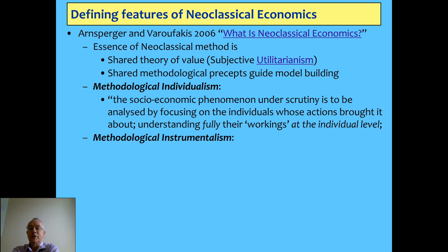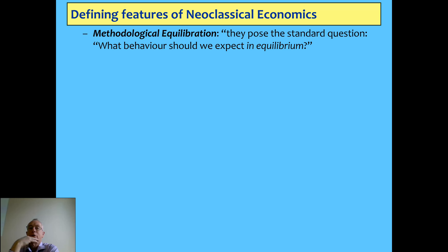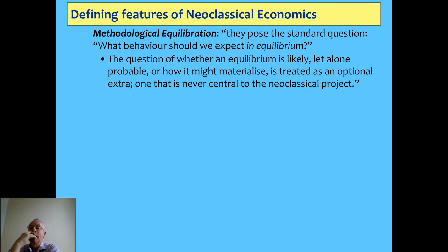It's also instrumental — preference satisfaction is the vision they're after — and it's all about methodological equilibration, as Varoufakis calls it. They pose a standard question: what behavior should we expect in equilibrium? Because that is seen as the state towards which the system is going to head. The question of whether an equilibrium is likely or probable is treated as optional. This certainly applies to DSGE models, where when you look at the equilibrium, it's actually mathematically unstable.